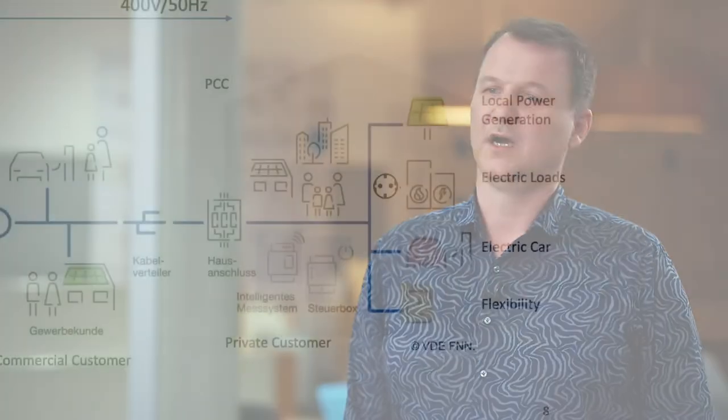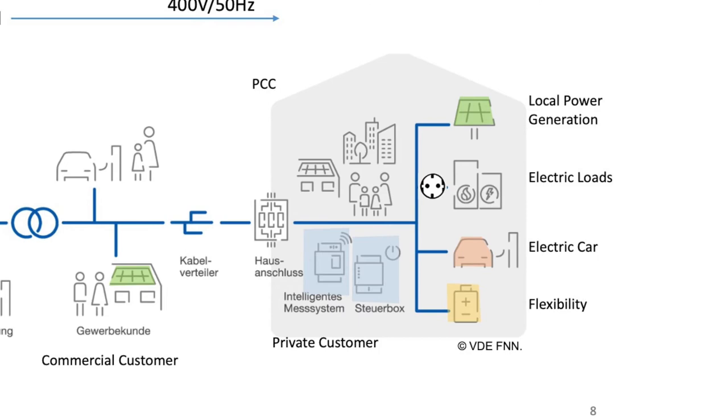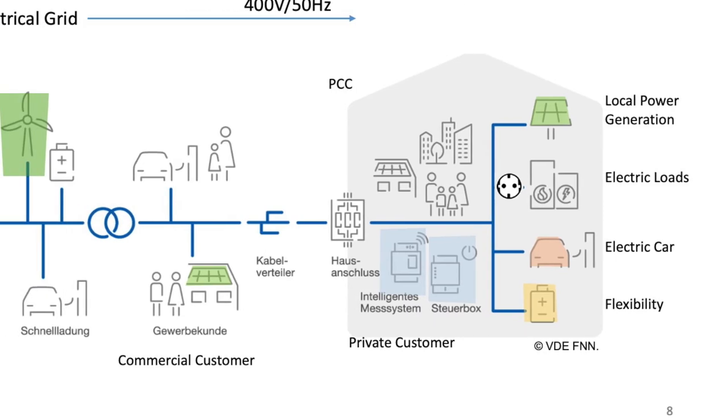So if we want to understand where electricity comes from, we have the first answers: local power generation and flexibilities like the battery can provide part of the energy consumed by our loads. But if the power is not generated locally at the time loads consume, we can still turn on the lights and they still work, because there are other energy producers and power generation units outside our house. Leaving our house through the point of common coupling toward the grid, we will first be connected to a distribution cable.